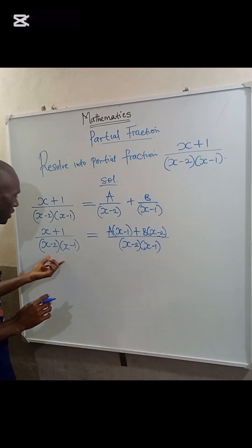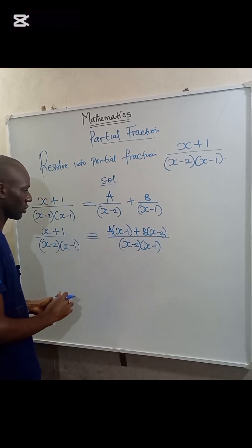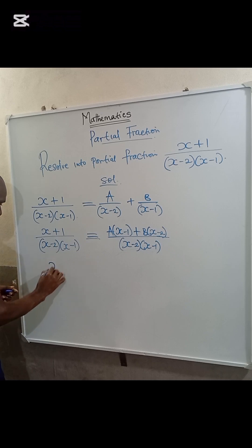We have at this point, since the denominators are equal, the numerators should be equivalent. So we are equating the numerators now. So we have X+1 equals A(X-1) + B(X-2).